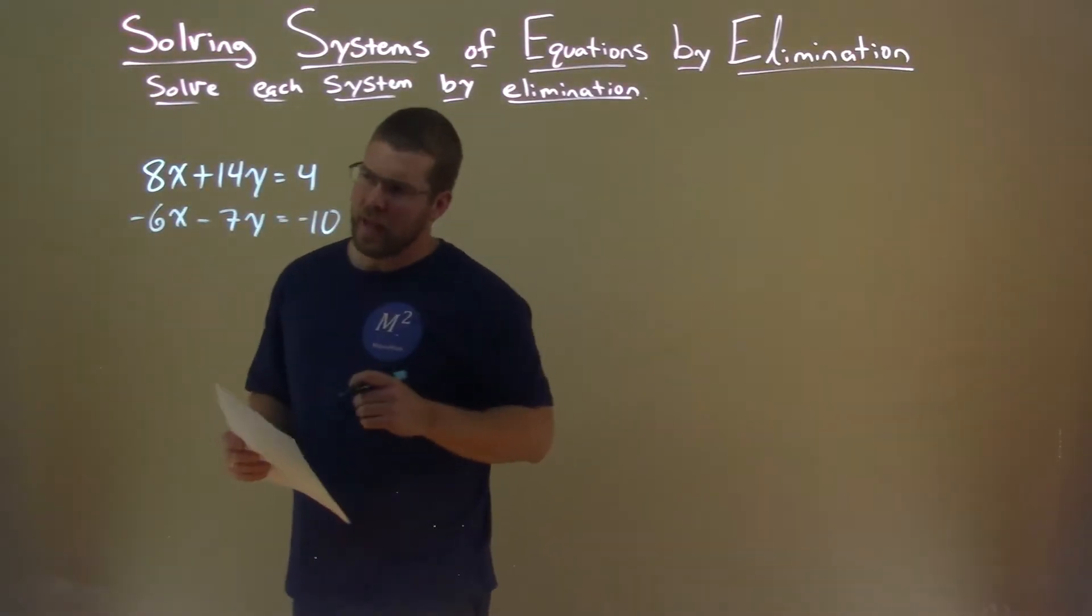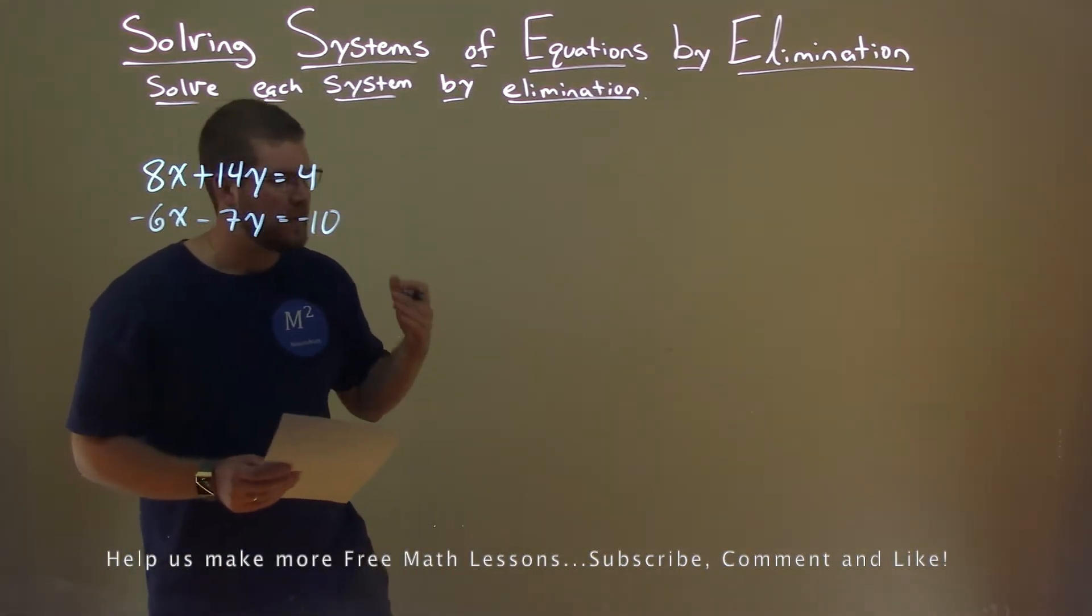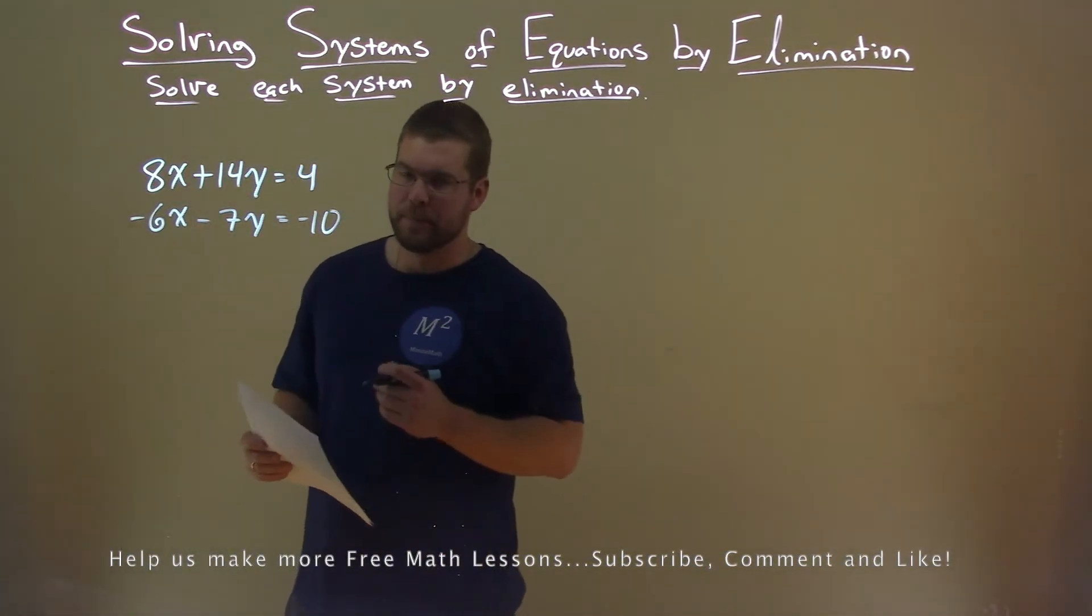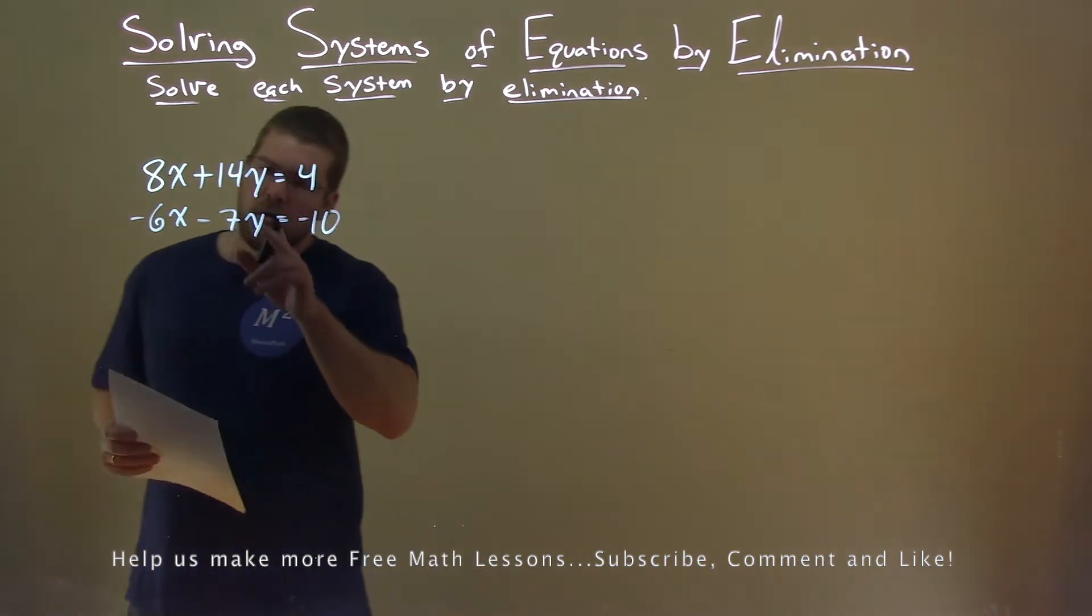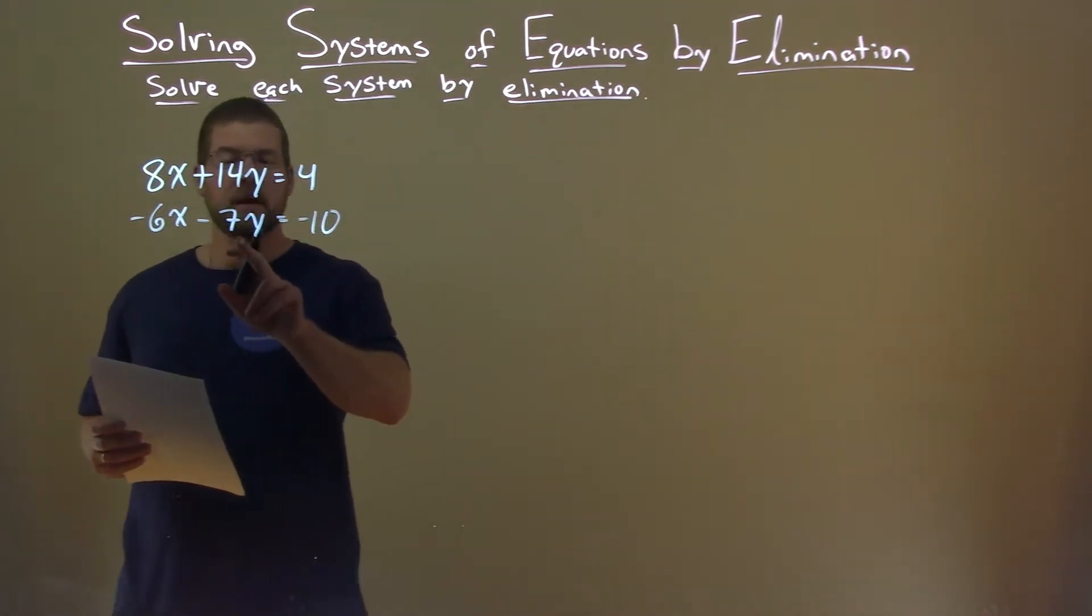We're given this problem: 8x plus 14y equals 4, and negative 6x minus 7y equals negative 10. I notice the 14y minus 7y. 7 times 2 is 14.